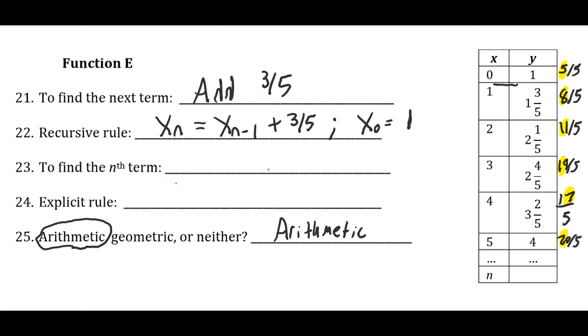So notice this time, we did start at 0. So when we describe how to find the nth term, so we're starting at 1, and then we're adding 3 fifths just n times. Let me make that a little more clear. So n times, because we started at 0. So again, you can see that if I start at, let me use a different color here. If I start at 4, so I've added 3 fifths, 1 time here, 2 times here, 3 times here, and 4 times here, which matches up with n being 4.